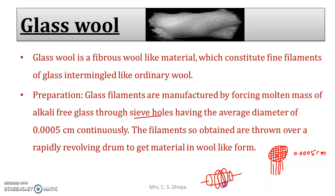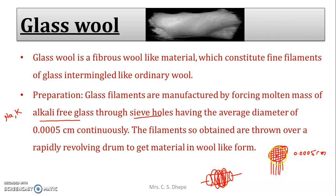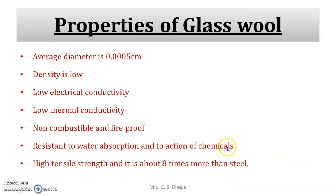The fine filaments coming out of the sieve holes are continuously thrown over a rapidly revolving drum. Finally, you obtain a wool-like structure — that is nothing but your glass wool. The name itself indicates it is made from glass, in the form of wool.